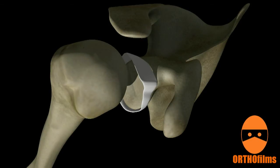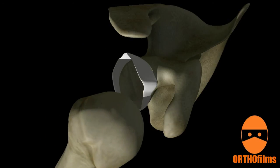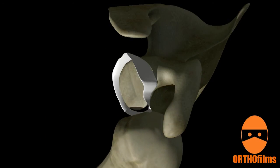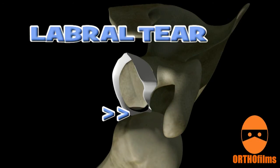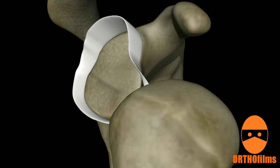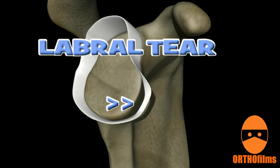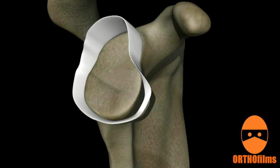Sometimes the humeral head tears part of the labrum away from the glenoid as it dislocates. This is known as a Bankart lesion. The Bankart lesion can result in chronic instability and often requires surgical repair. If a piece of bone is broken off from the glenoid, it is known as a bony Bankart lesion.